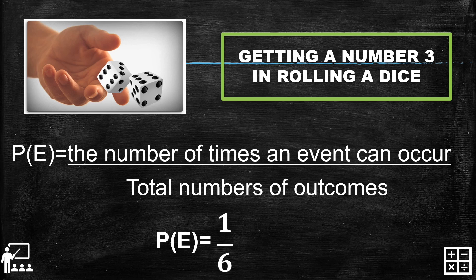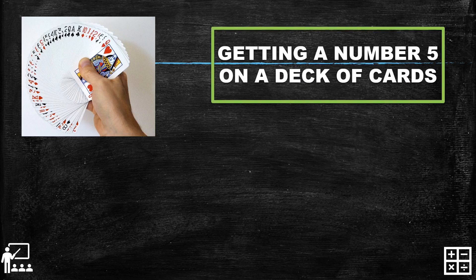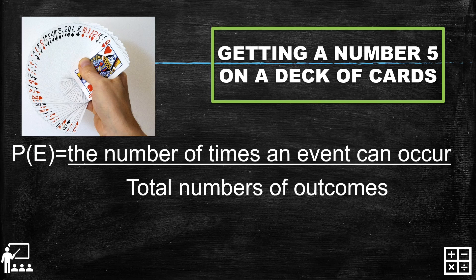So for this experiment, the probability is one over six. Next, we look at a deck of cards. The event we're going to use is getting a number five from a deck of cards. Again, we're going to use the formula: P equals the number of times an event can occur over the total number of outcomes.